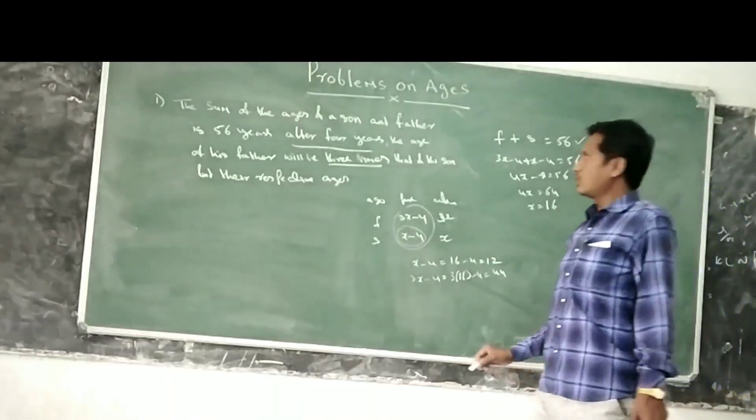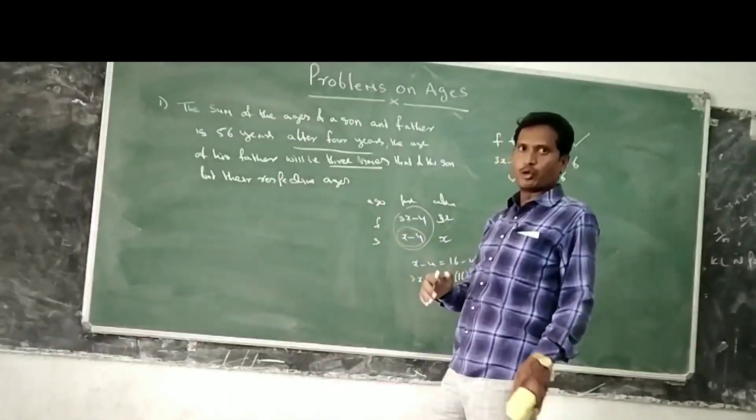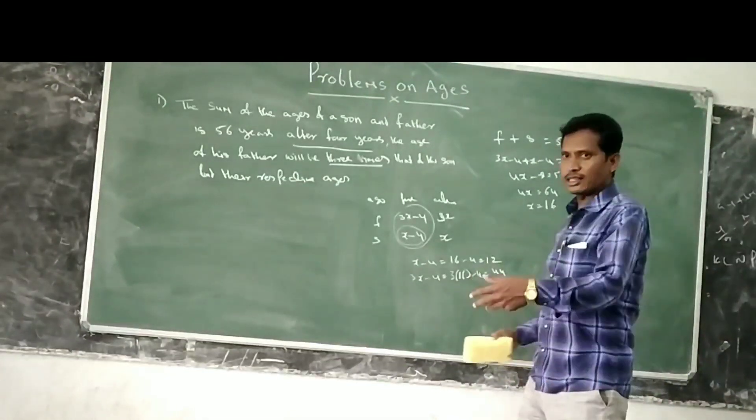This is one method. This is the first method of sum of ages with after or before. Another method is there. I will take another question.